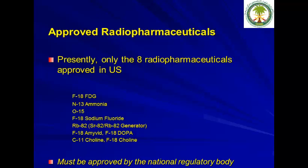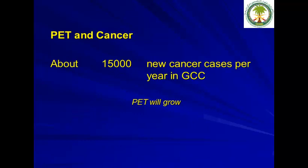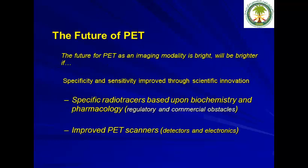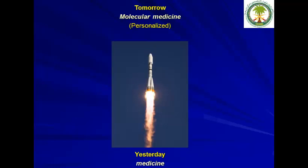The radiopharmaceuticals currently approved in the United States are: FDG, ammonia, O-15, F-18 sodium fluoride, rubidium-82 generator, F-18 Amyvid, C-11 choline, and F-18 choline. These must also be approved by your national regulatory body. In the GCC, we are registering almost 15,000 new cancer cases annually, which tells us PET will grow. The future of PET as an imaging modality is bright, and will be brighter as we develop greater specificity and sensitivity by developing new radiotracers based on biochemistry and pharmacology, and by improving scanner detectors. With all these improvements, we are being taken from yesterday's medicine to tomorrow's medicine — molecular medicine or personalized medicine.